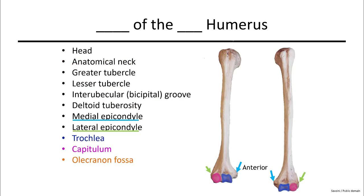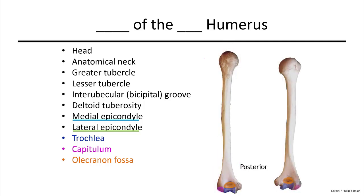At the distal end we have both the medial and lateral epicondyles — ridges above the lower rounded surface. The lateral epicondyle is indicated in green and the more prominent medial epicondyle can be felt by running your thumb down the medial side of your upper arm. The trochlea looks like a sideways spool of thread, and the capitulum is a more circular portion. On the posterior surface we can see the olecranon fossa, as well as portions of the trochlea and capitulum.